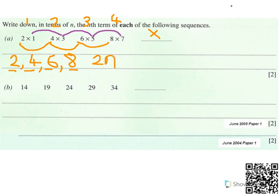I multiply the term number — these numbers up here — by two. So the one on the left will be two n.